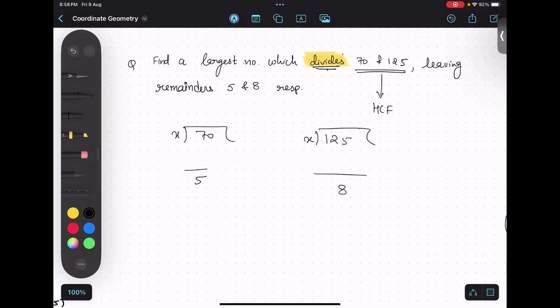If we find HCF of these two numbers, the remainder will be 0 in that case. But I want a remainder. So what I'm going to do is subtract this 5 and 8 from the respective numbers and find HCF of that. Is that clear?